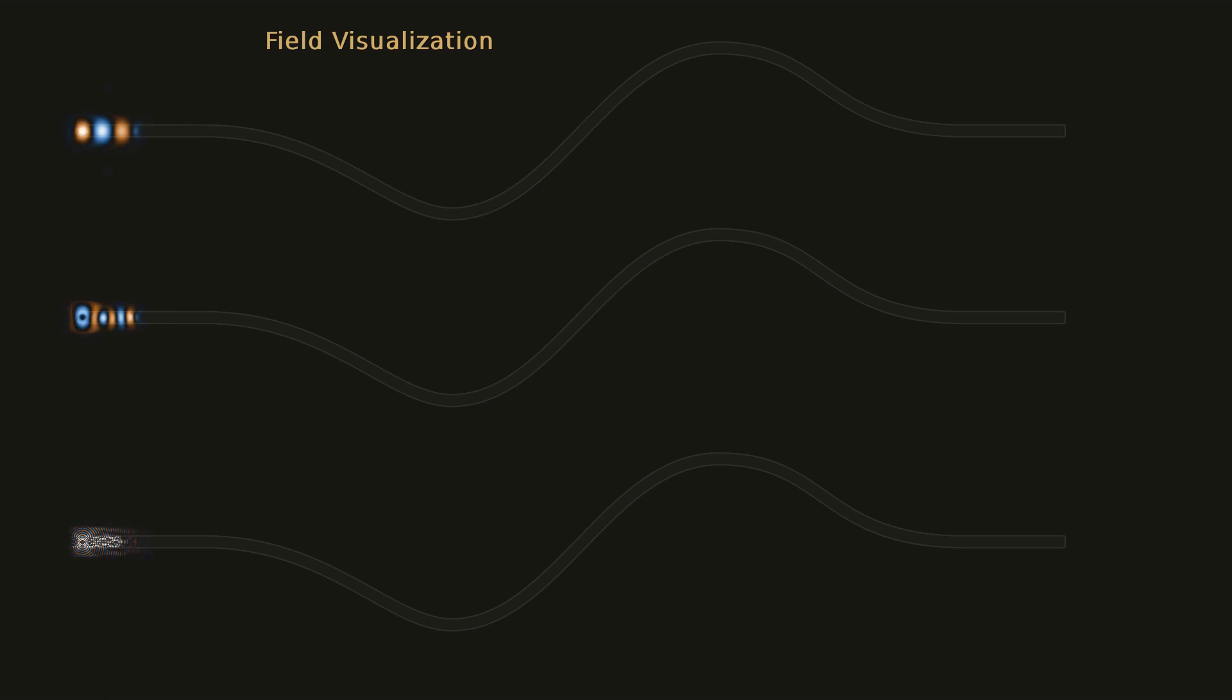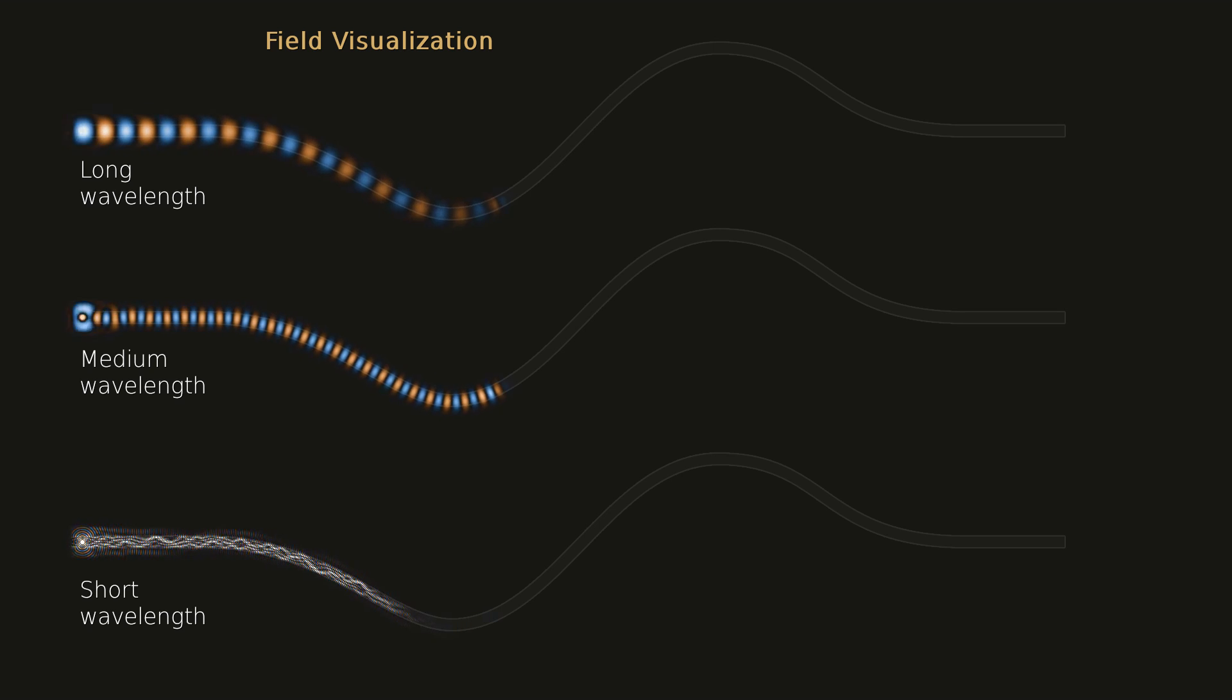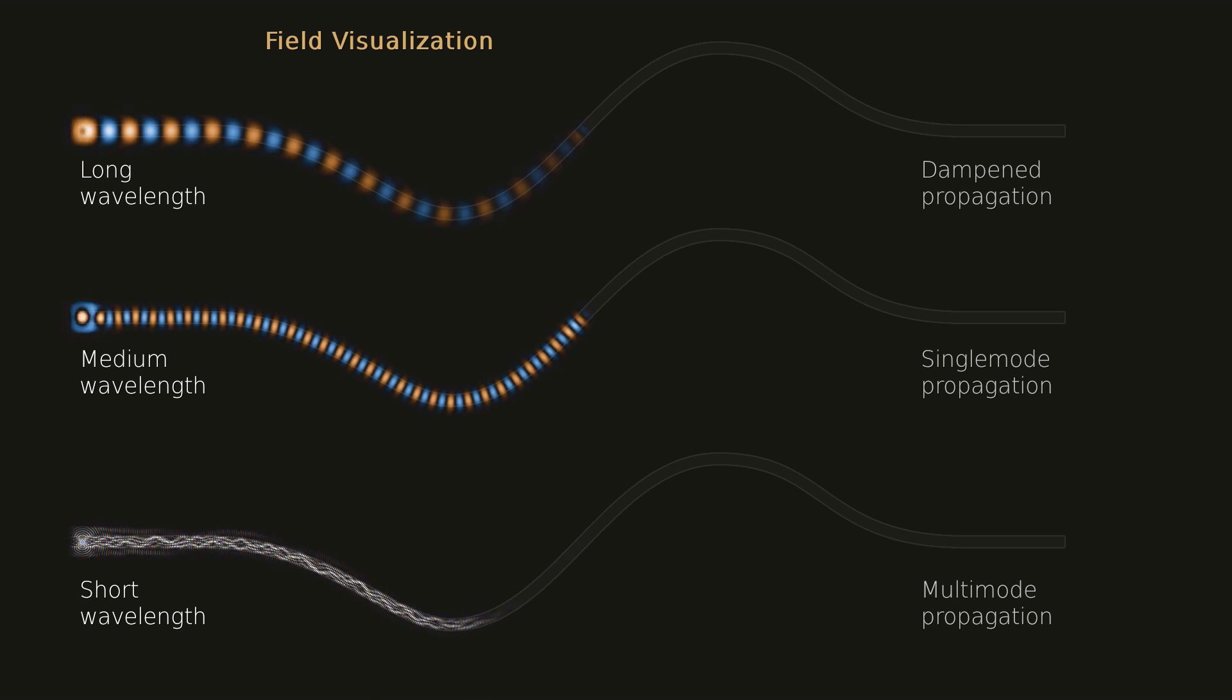In this simulation, light of three different wavelengths is coupled into equal fibers and you can observe some interesting details. The top fiber is too small for the wavelength, so light propagation is strongly attenuated.